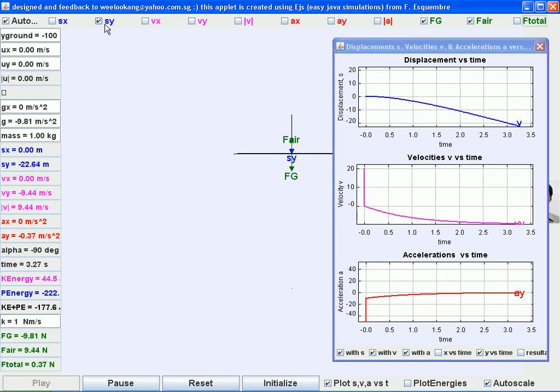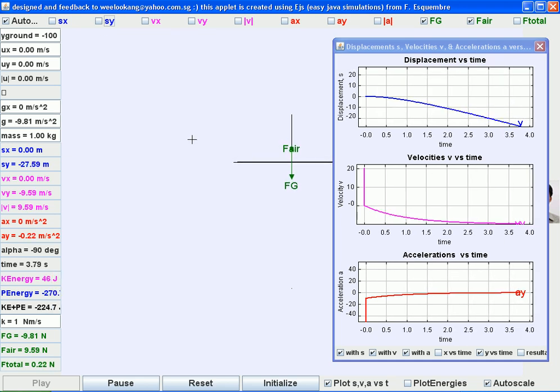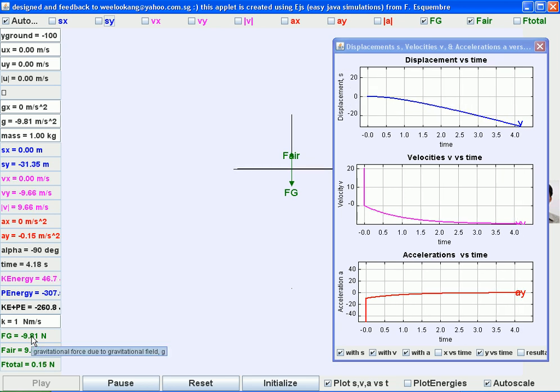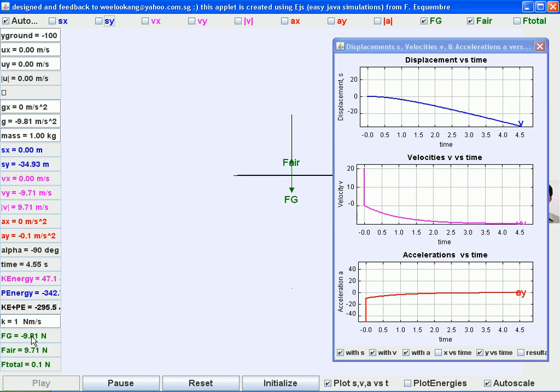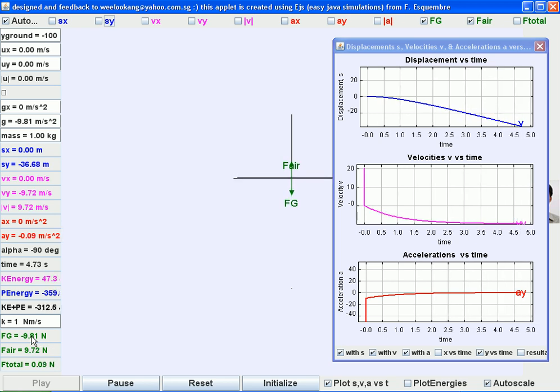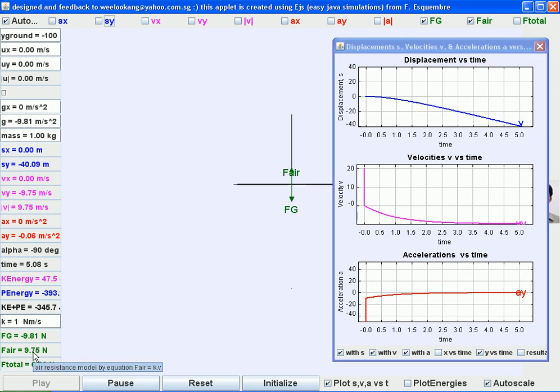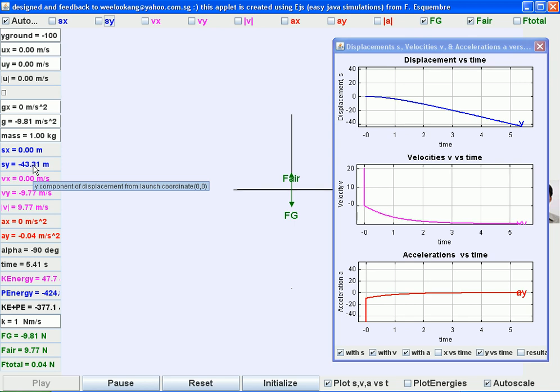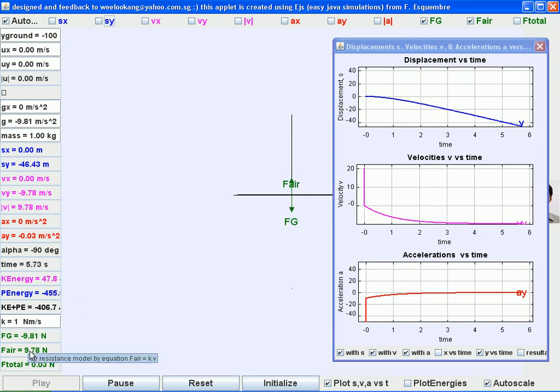As you can see, as the object falls, the force of gravity is constant at negative 9.81. The air resistance grows gradually and eventually when it reaches terminal velocity, the total force will be equal to zero to produce zero acceleration.